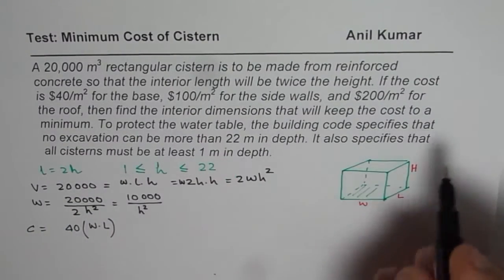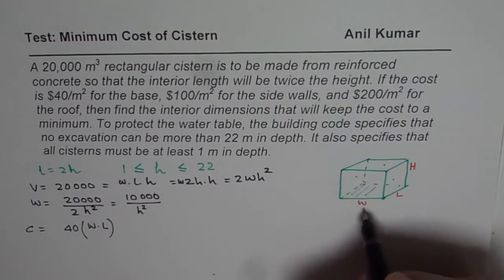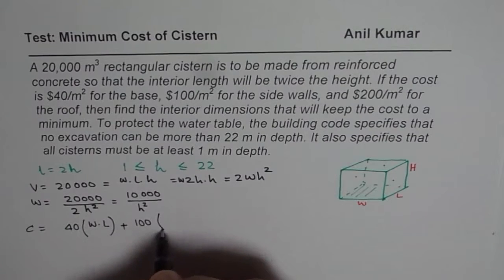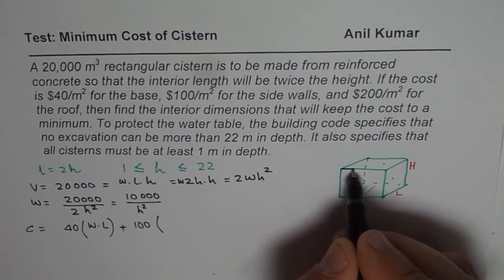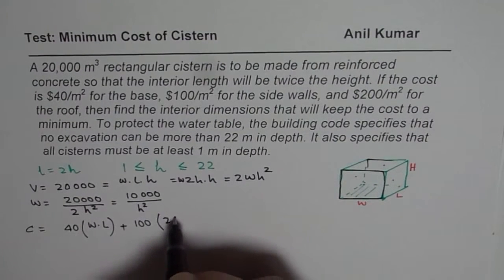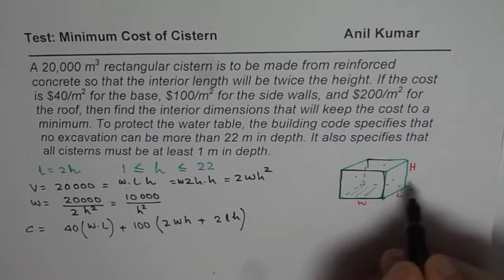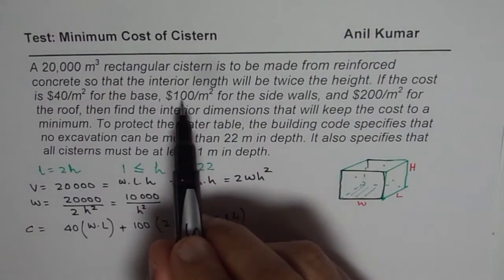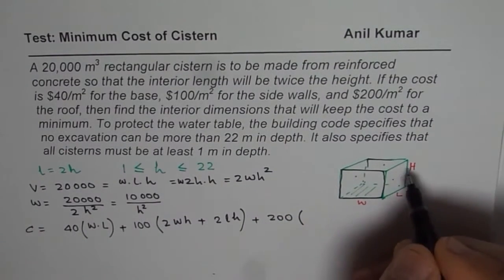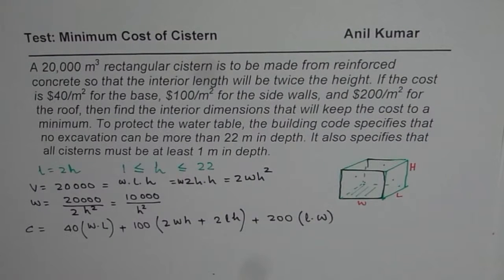100 per meter square for the side walls. We have 4 side walls: the front and back have area width times height, and the two sides have area length times height. So the side wall cost is 100 times (2 times width times height plus 2 times length times height). And 200 per meter square for the roof, which has area length times width. So cost equals 40(l·w) + 100(2wh + 2lh) + 200(l·w).